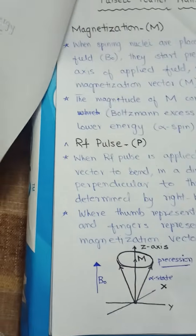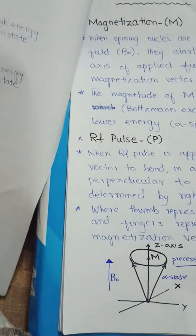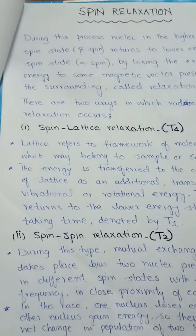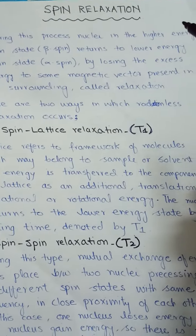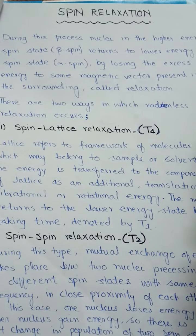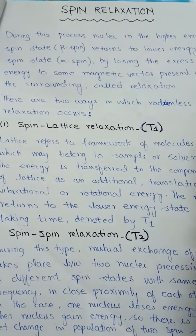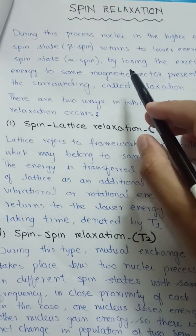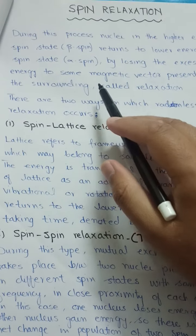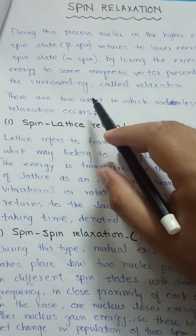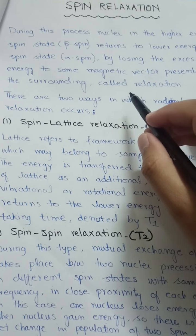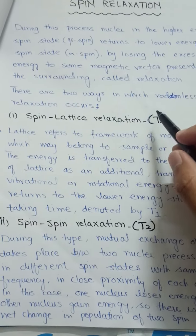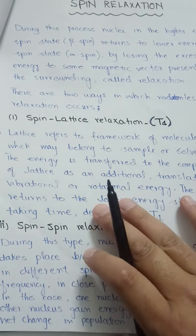The first topic is spin relaxation. During the process, nuclei in a higher energy spin state — that is the beta spin state — return to the lower energy spin state by losing excess energy to some magnetic vector present in the surrounding, which is called relaxation. There are two ways in which this radiation-less phenomenon occurs.